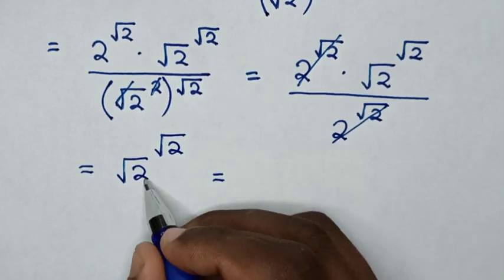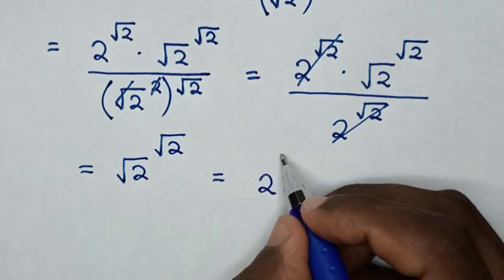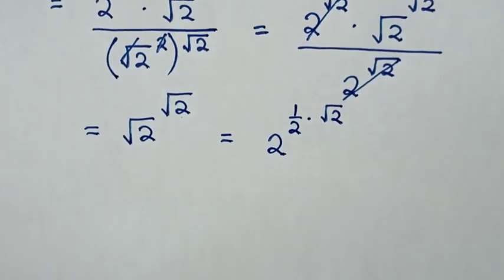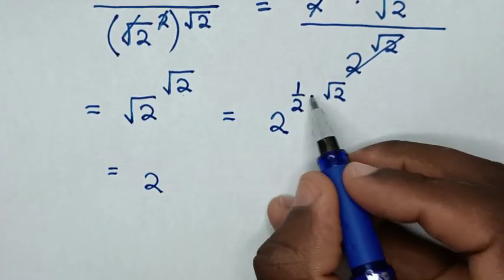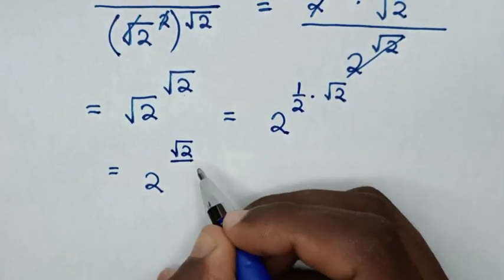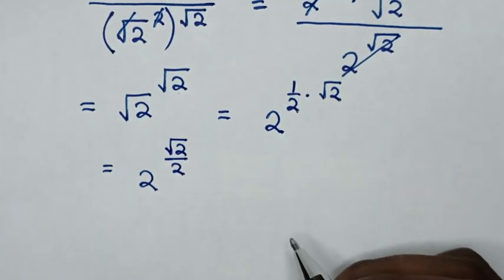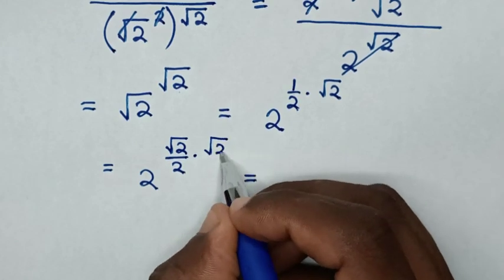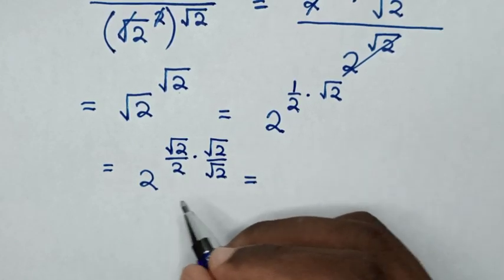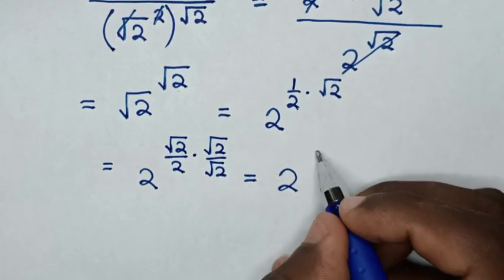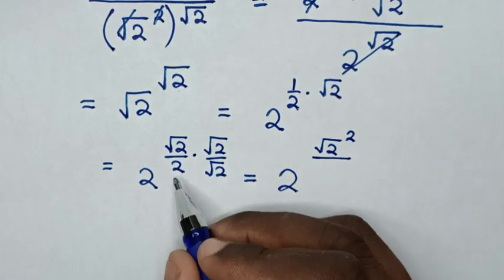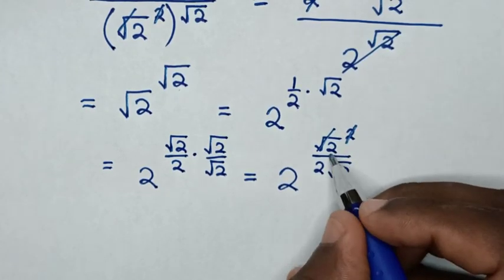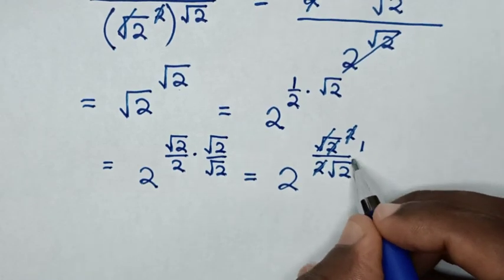It will be equal to 2 power of 2, then times square root of 2, so it will be equal to 2 power of 1 times square root of 2 over this 2. In the next step, this square will cancel with this square root, and this 2 will cancel with this 2, so it will be 1 over square root of 2.